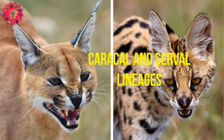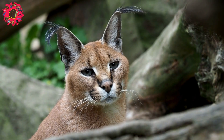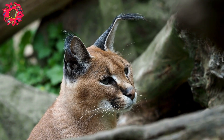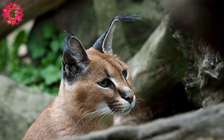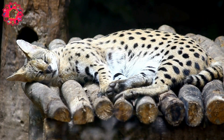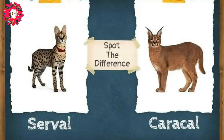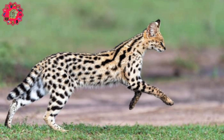Caracal and Serval Lineages. The next branch of Felinae diverged 8.5 million years ago and consists of several medium-sized African and Asian cats. This group contains the caracal and its rainforest cousin, the African golden cat, as well as the genus Leptailurus, which contains the serval. An interesting fact is that the caracal was present as far east as India, despite being an animal often associated with African fauna.